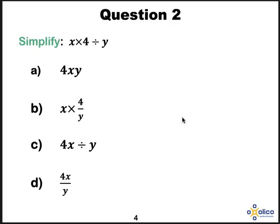Can you simplify x times 4 divided by y? Have a look at the answers. The best answer is D, it is the simplest. It is not A because there is a divide. There is still a times sign, there is still a divide sign, not a divide line.